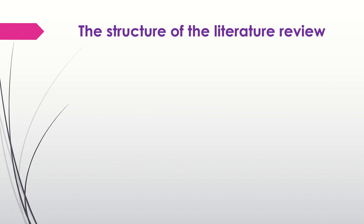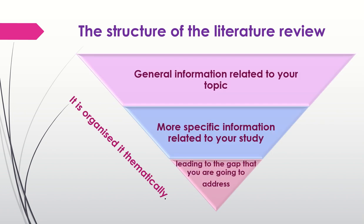The literature review is usually organized thematically and its structure is similar to an upside down triangle. You need to start with more general information related to your topic and then narrow down your discussion by considering literature related to your specific research topic or issue. This will lead to the gap you are going to address in your study. This structure helps to keep the literature review relevant and focused.